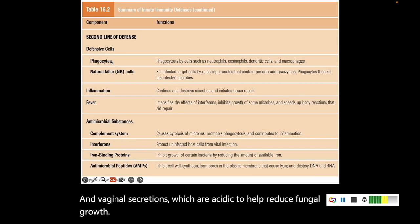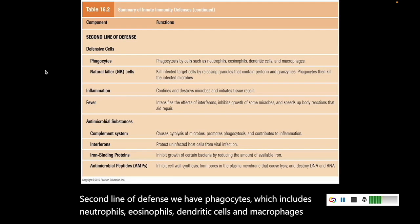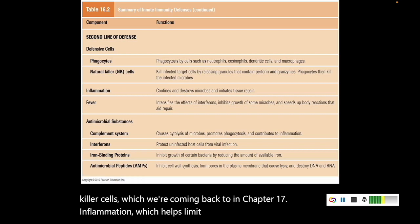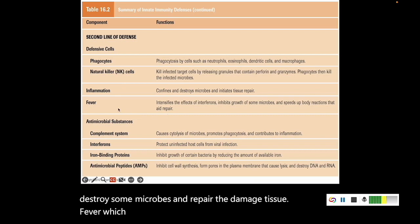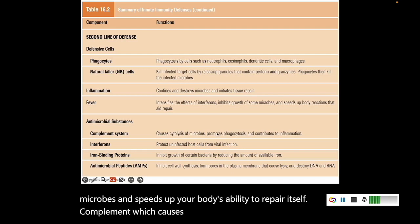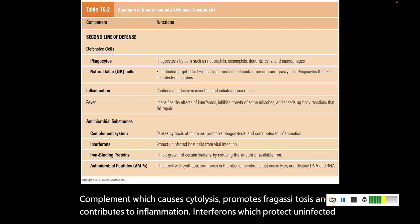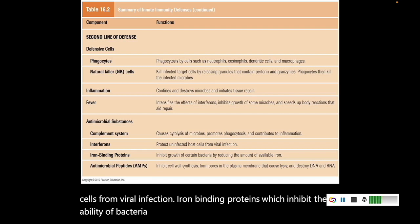For the second line of defense, we have phagocytes, which includes neutrophils, eosinophils, dendritic cells, and macrophages. Natural killer cells, which we'll come back to in chapter 17. Inflammation, which helps limit where a microbe can spread, destroys microbes, and repairs damaged tissue. Fever, which intensifies interferons, helps inhibit the growth of microbes, and speeds up the body's ability to repair itself. Complement, which causes cytolysis, promotes phagocytosis, and contributes to inflammation. Interferons, which protect uninfected cells from viral infection. Iron-binding proteins, which inhibit the ability of bacteria to access iron. And antimicrobial peptides, which can have a broad range of effects.